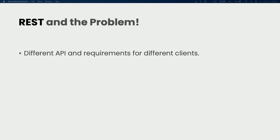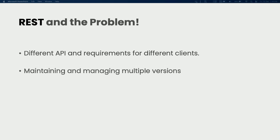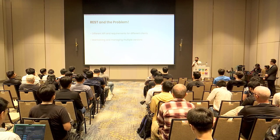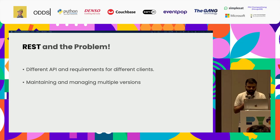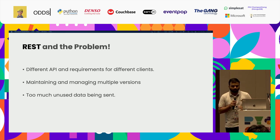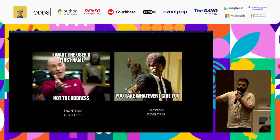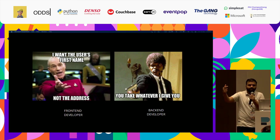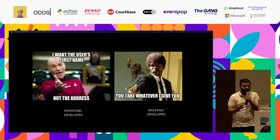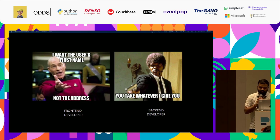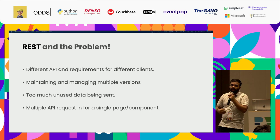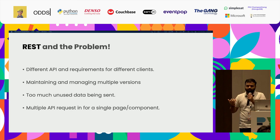Different APIs had different requirements for different clients. Each team had different sets of requirements for serving the same data, and we had to manage multiple versions of the same thing. If we needed to change something, we had to version-increment an endpoint, write a new V2 endpoint, and move all the other data even for small, minute changes. There was also too much unwanted data being sent. If a mobile app only requires the email address while the web app requires more fields, the same API gives the mobile client everything including unwanted data. In a single page, they had to call multiple different API requests and handle a lot of calls to the back end.